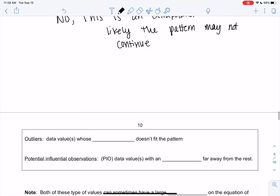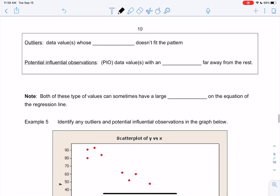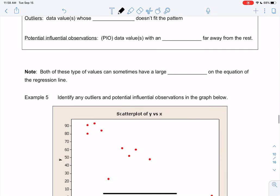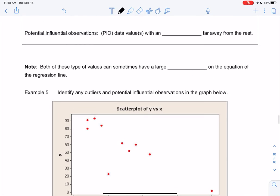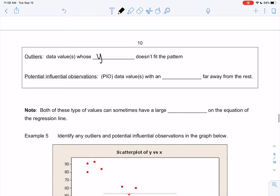Alright. One final example. We have these things called outliers. We've talked about outliers, but it's slightly different here. There's kind of like two types of outliers. So outliers are data values whose Y value doesn't fit the pattern.